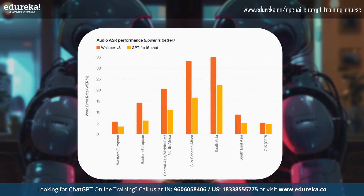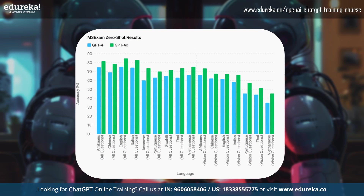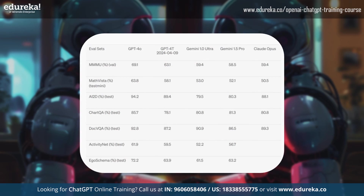For audio ASR performance, GPT-4O significantly boosts speech recognition accuracy over Whisper V3, performing much better with lower-resource languages. For speech translation, GPT-4O sets new benchmarks, outperforming Whisper V3 and also Google and Meta models, especially on the MLS benchmark. On the M3 exam results — a standardized test for multilingual and vision evaluation — it outperforms GPT-4 across all languages and also outperforms GPT-4 Turbo, Gemini, and Claude in vision understanding.